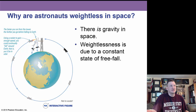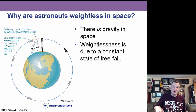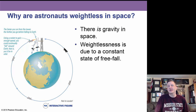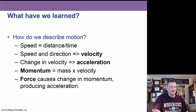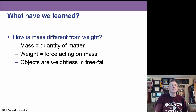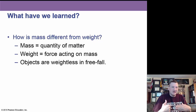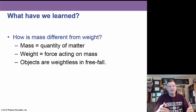Why are astronauts weightless in space? There is gravity in space, but the weightlessness is due to a constant state of free fall — the spacecraft is always falling toward Earth, but at such a height and velocity that it continuously falls back toward Earth, generating the feeling of weightlessness. Speed and direction equals velocity; change in velocity is acceleration; momentum is mass times velocity. Weight may be different on Earth versus the Moon, Mars, or Jupiter, and objects are weightless in free fall.